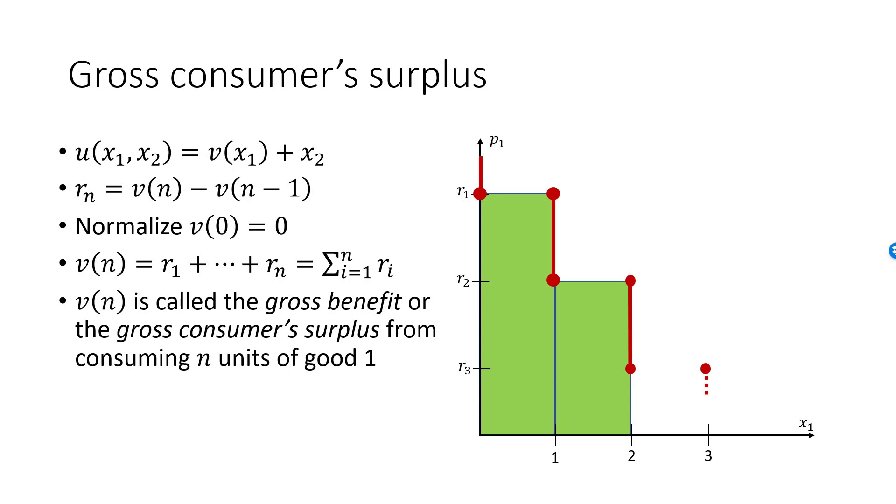In general terms, v of n is the gross benefit or the gross consumer surplus from consuming n units of good 1, and it is the area under the demand curve from x1 equal to 0 up to x1 equal to n. Think about this for a while and convince yourself that it makes sense to use the area under the demand curve as a measure of the benefit to our consumer of consuming xn units of good 1.